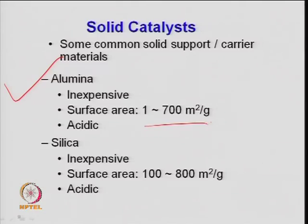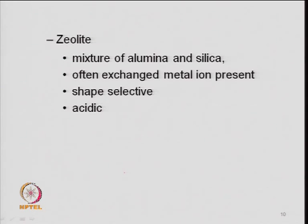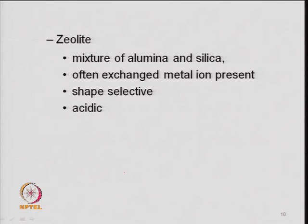Alumina is also acidic in nature, so it can provide acidic sites required for the catalytic reaction. Another catalyst support widely used in petrochemical and refinery industry is zeolite. FCC catalyst is generally zeolite — there are different varieties depending upon their silica-to-aluminum ratio. The silicon-to-aluminum ratio is very important in the case of zeolite to provide different kinds of acidity.